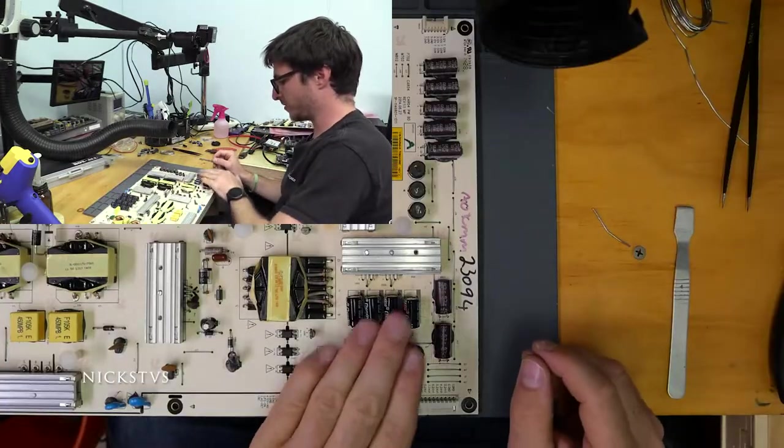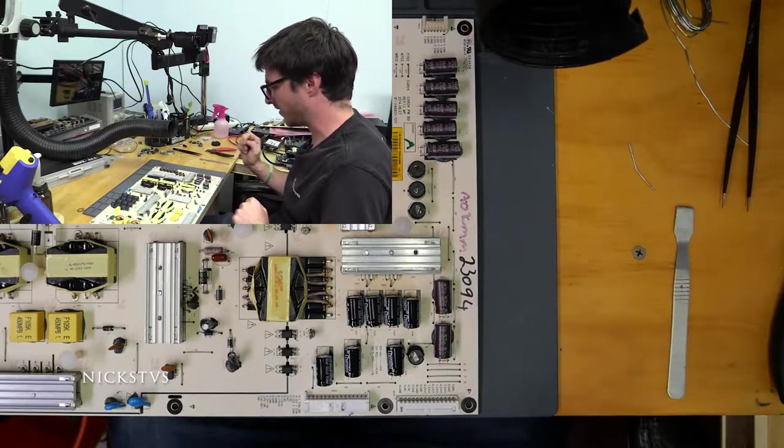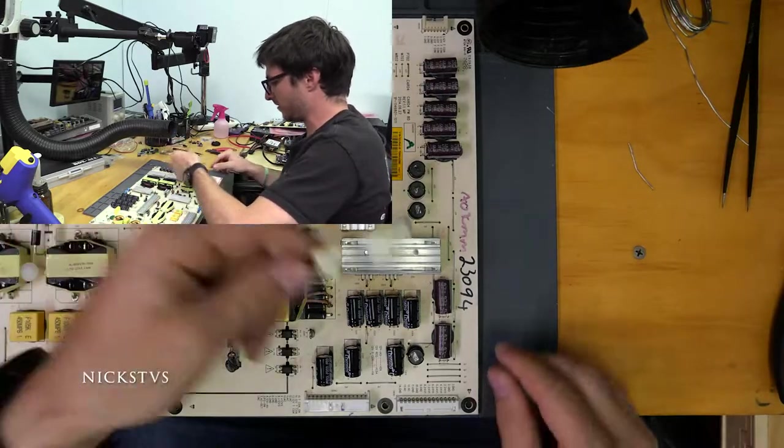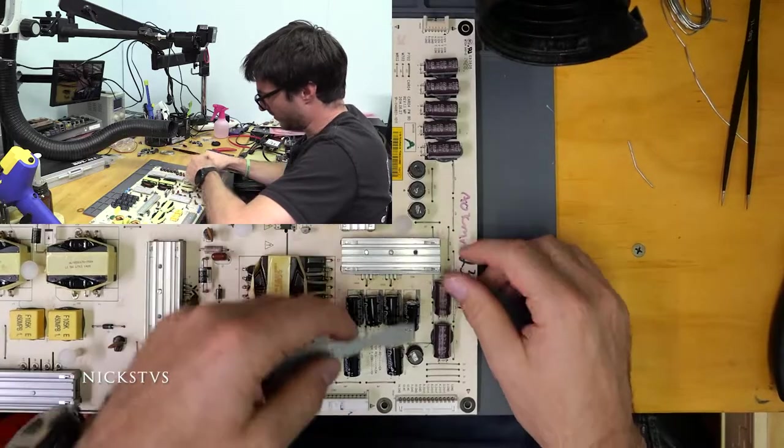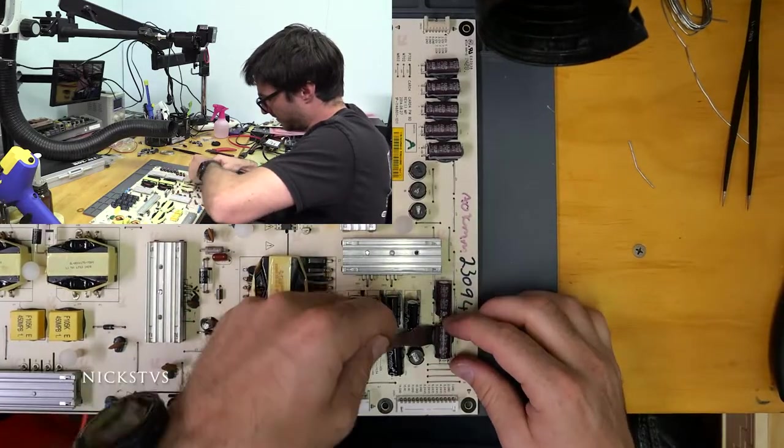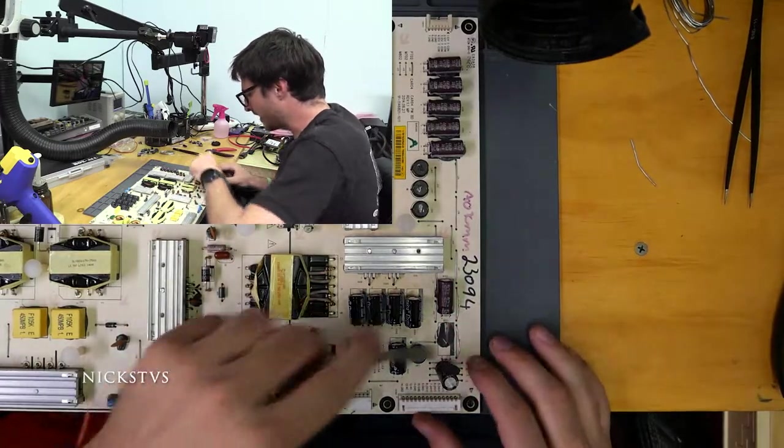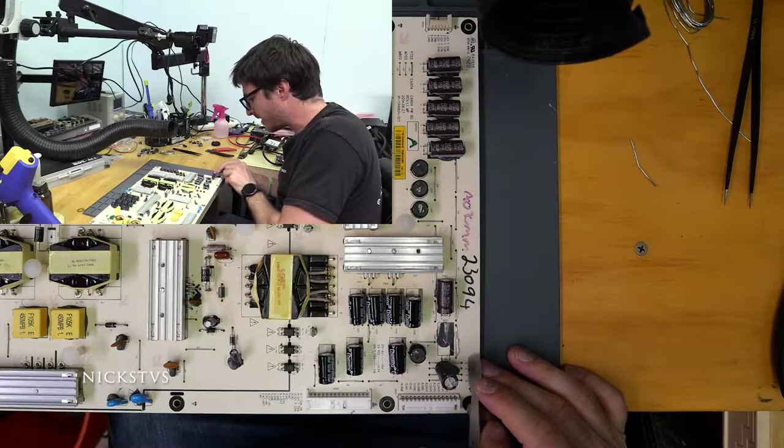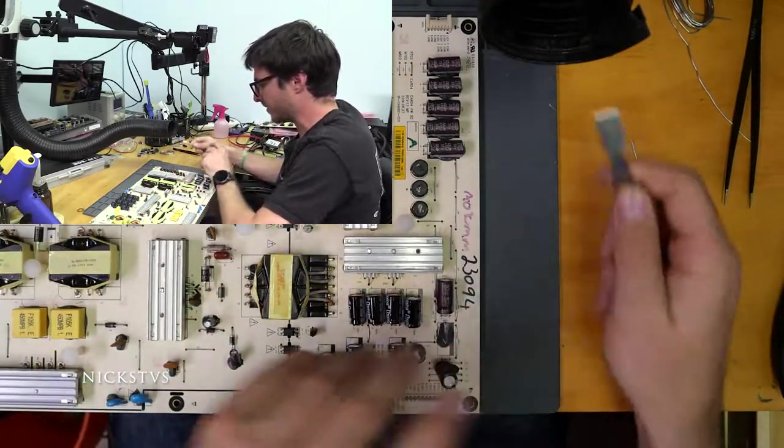We just finished with the 1000 microfarad 16 volt capacitors so now let's go ahead and work on the 470 microfarads 35 volt capacitors. Same as before, using the little spatula tool I'm going to gently pry up the capacitors off of the board. And you got to be careful, it looks like I did hit this jumper on the other side. I didn't damage it but I did bend it so just be aware of that, just be careful.